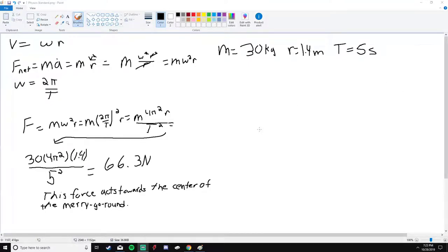Hello everyone, welcome to today's video. Today we're going to be solving a circular motion problem in physics. The problem reads that a 30 kilogram child plays on a merry-go-round in the playground. This child is 1.4 meters from the center of the merry-go-round, and it makes a revolution once every five seconds.